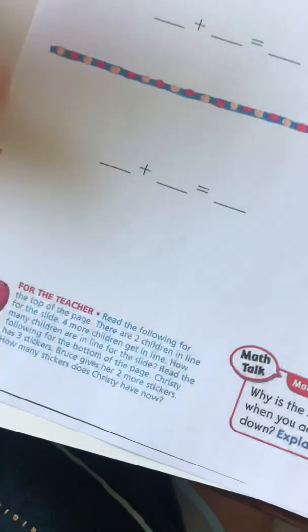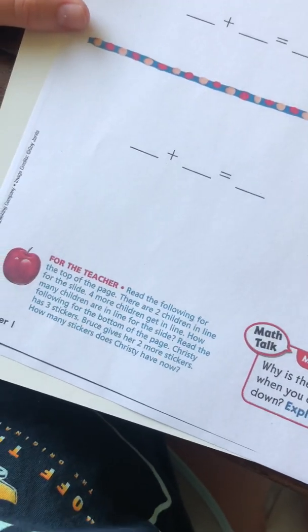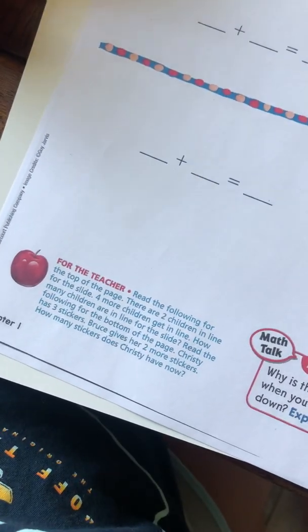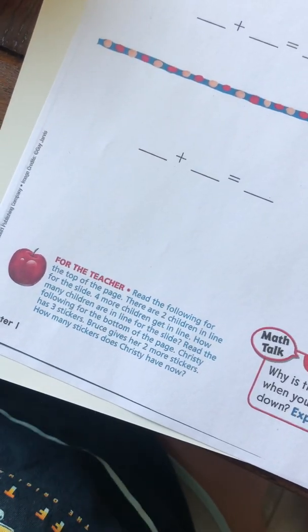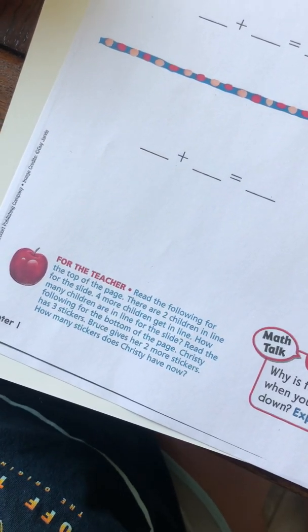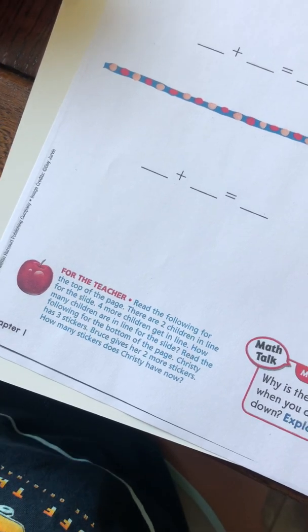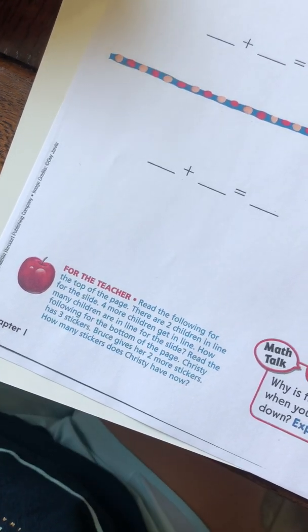Let's see what the question says. It says, there are two children in line for the slide. Four more children get in line. How many children are in line for the slide? So that's the top problem.